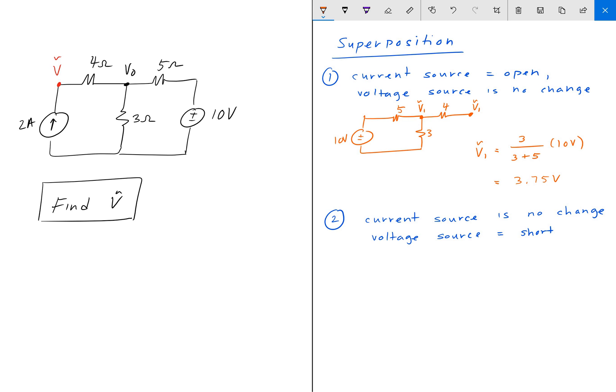So that new topology looks like this. We have a 2 amp current source, the 4 ohm resistor, the 3 ohm resistor, a 5 ohm resistor. And now we're going to short the DC source.